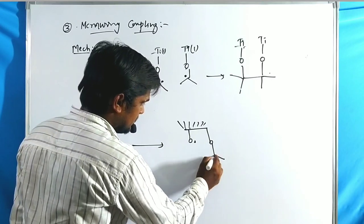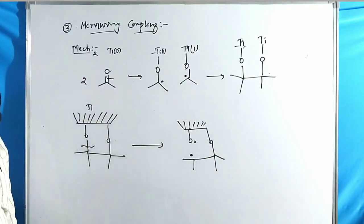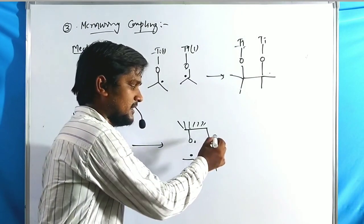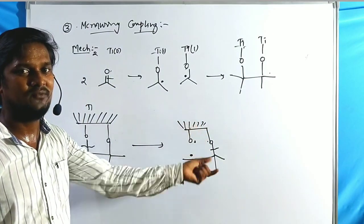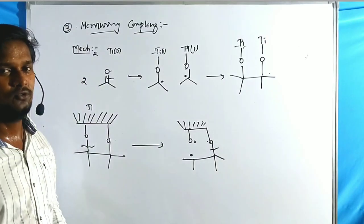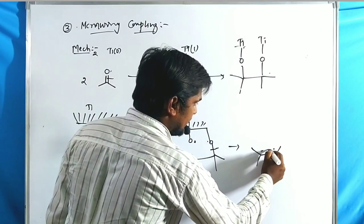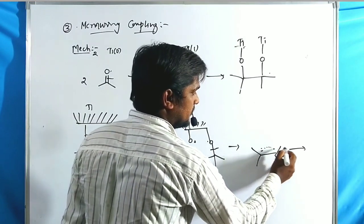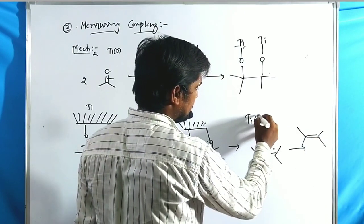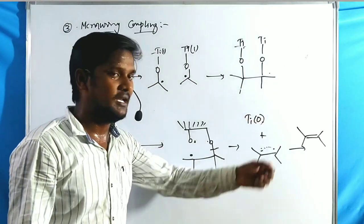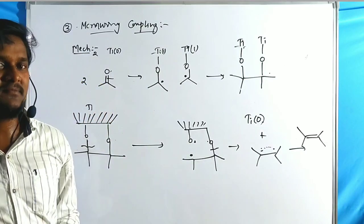The oxygen radical reacts with titanium to form titanium oxide (TiO). Two titaniums form two TiO molecules. The two carbon radicals then develop a double bond, forming C=C along with titanium oxide as byproduct. Titanium is eliminated at the +2 oxidation state. This is the simplest mechanism of McMurray Coupling.